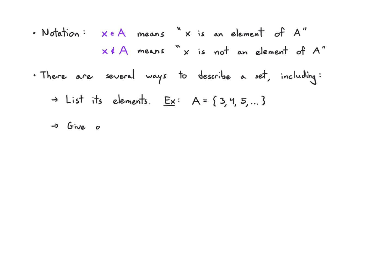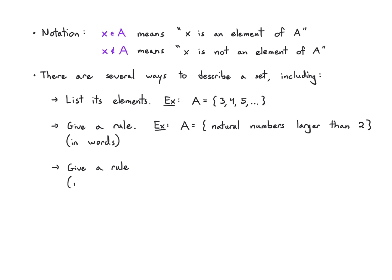I could also give a rule. I could describe it in words — the set A is the natural numbers that are larger than 2, which means the same thing as {3, 4, 5, ...}. I could also give a mathematical rule, writing x in the natural numbers such that x is greater than 2.